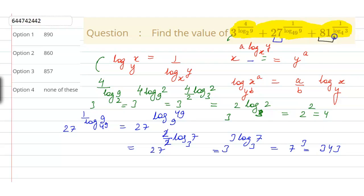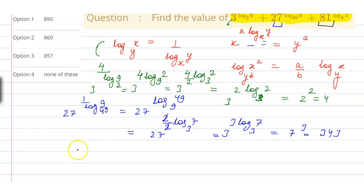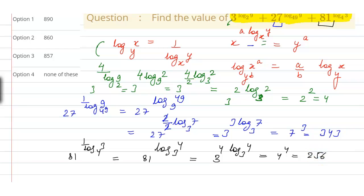Now we solve the last part: 81 to the power 1 upon log 3 base 4. This is 81 to the power 1 upon log 3 base 4, which we rewrite as 81 to the power log of 4 base 3. Writing 81 as 3 to the power 4 and applying the second property, this is equivalent to 4 to the power 4, which equals 256.